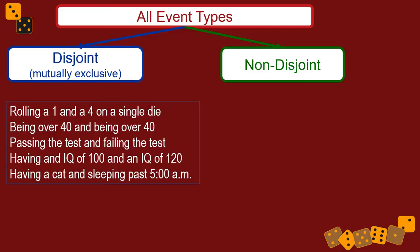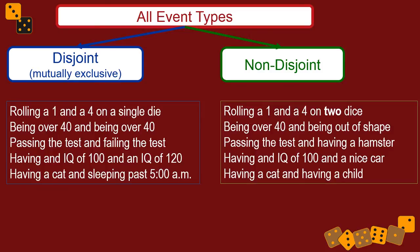Having an IQ of 100 and an IQ of 120, you can't have those at the same time. Your particular IQ is measured as exactly what it is. Non-disjoint outcomes, like rolling a one and a four on two dice - of course that can happen. You could be over 40 and out of shape. You could pass a test and also have a hamster. You could have an IQ of 100 and a nice car.